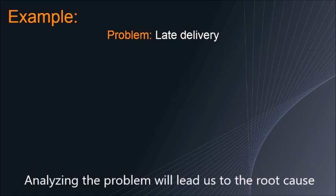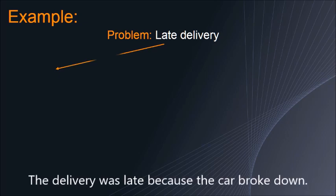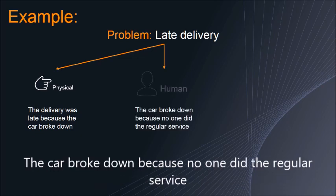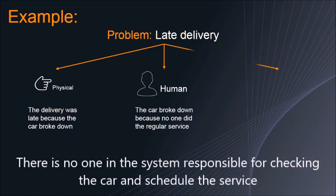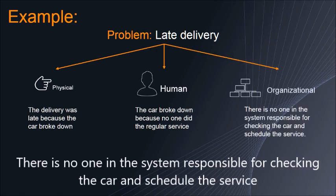Analyzing the problem will lead us to the root cause. The delivery was late because the car broke down. The car broke down because no one did the regular service. There is no one in the system responsible for checking the car and scheduling the service.